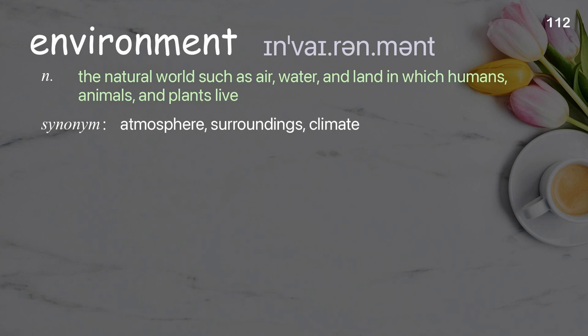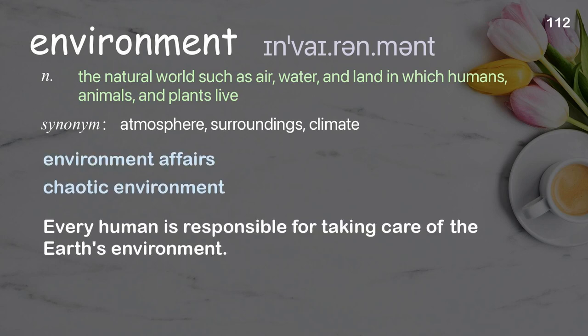Environment: the natural world, such as air, water, and land, in which humans, animals, and plants live. Examples: Environment affairs. Chaotic environment. Every human is responsible for taking care of the Earth's environment.